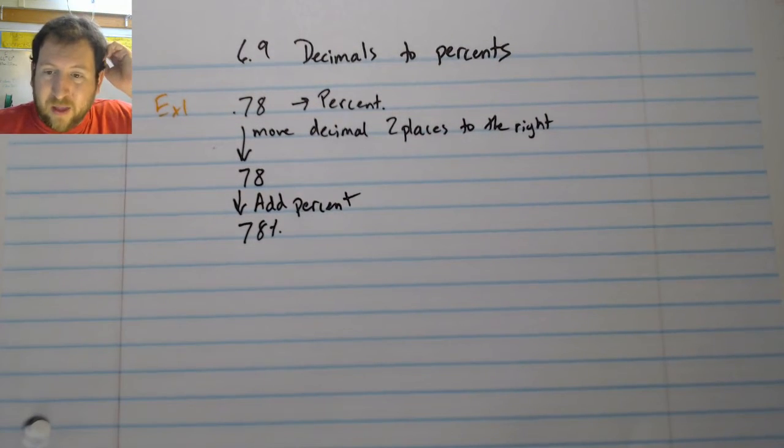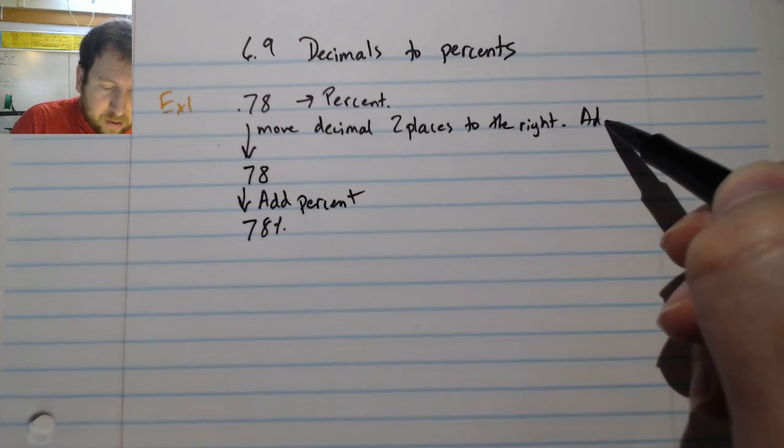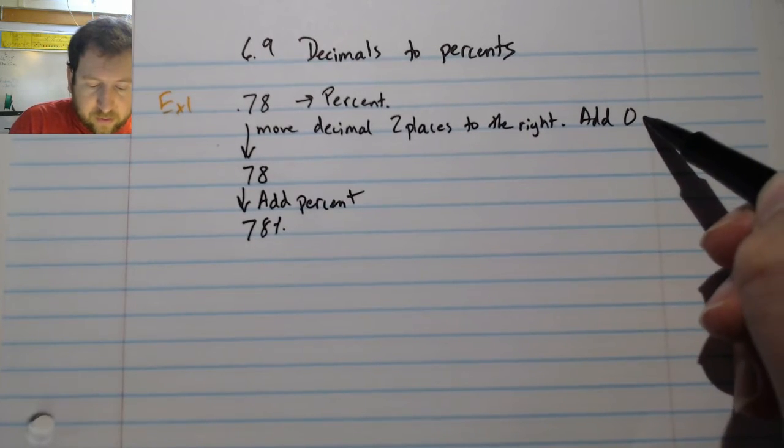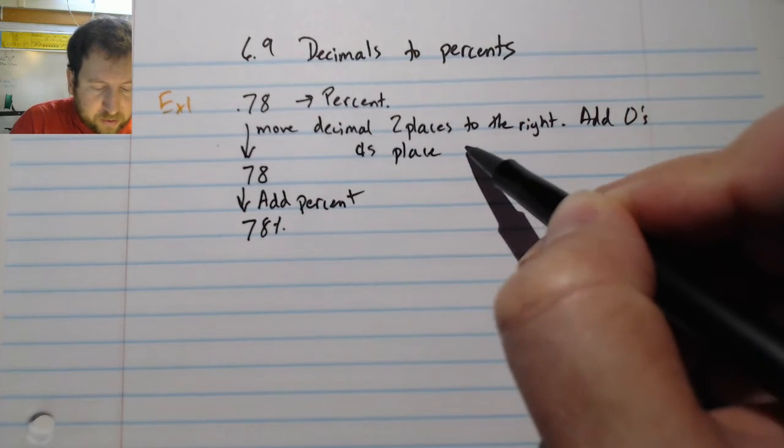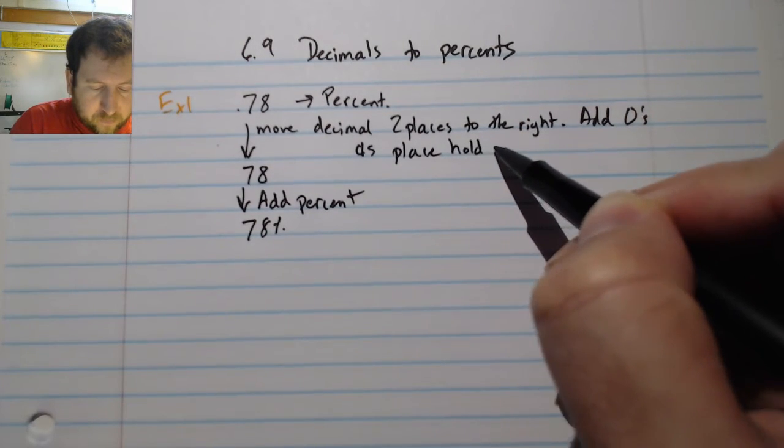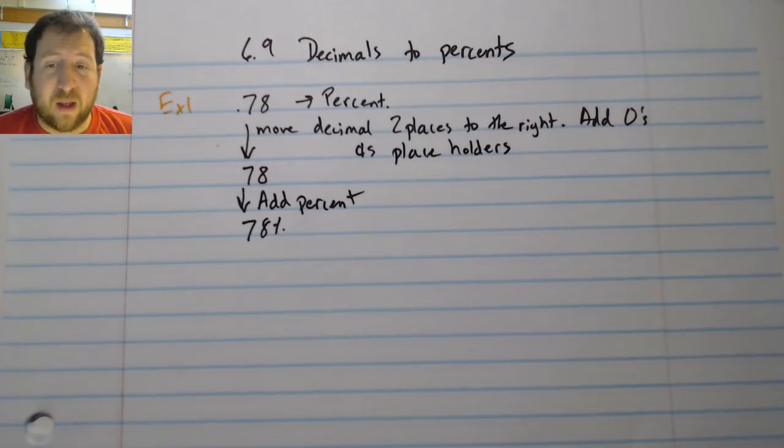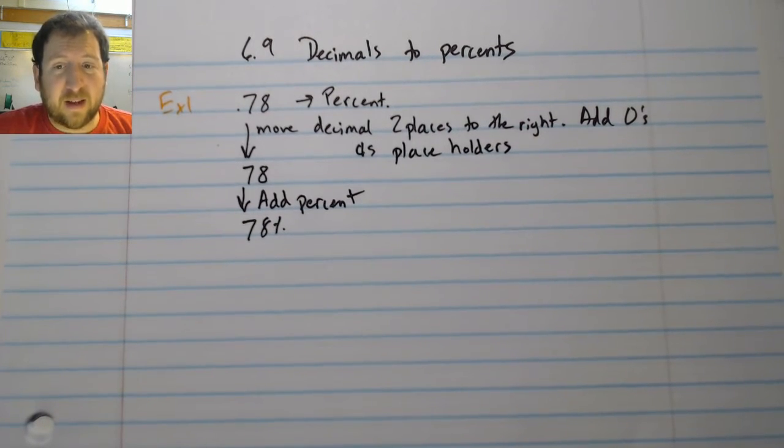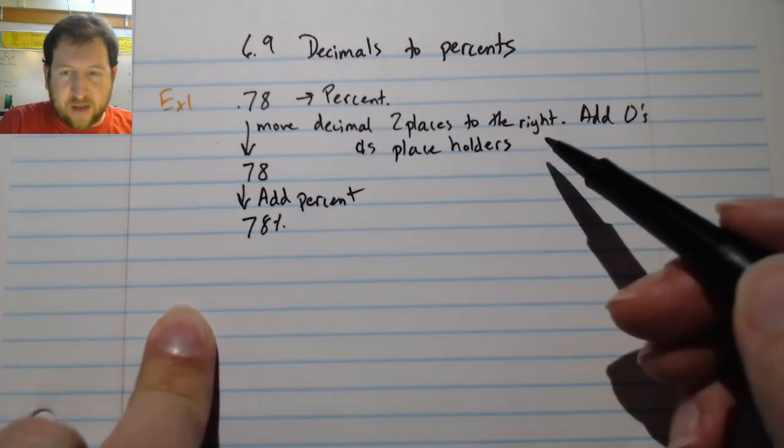Not too bad. Now, occasionally we have to add zeros as placeholders. But aside from that, this idea is pretty simple. Let me show you an example of when we have to add some zeros.